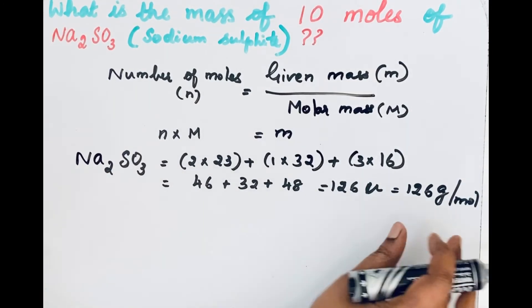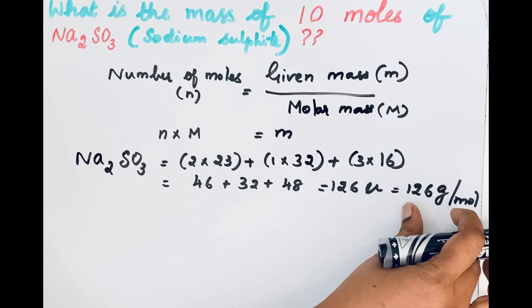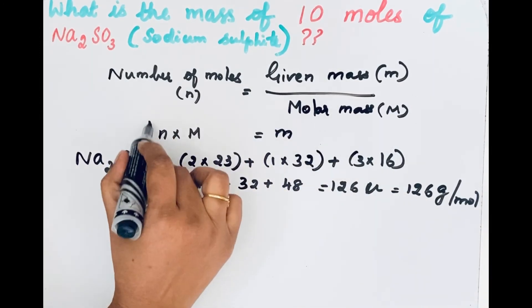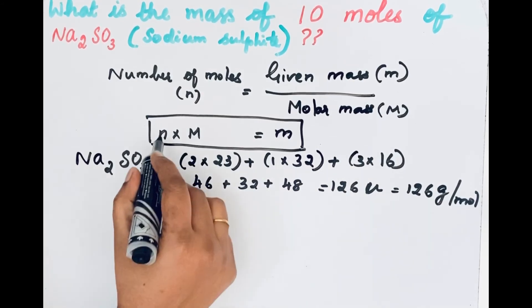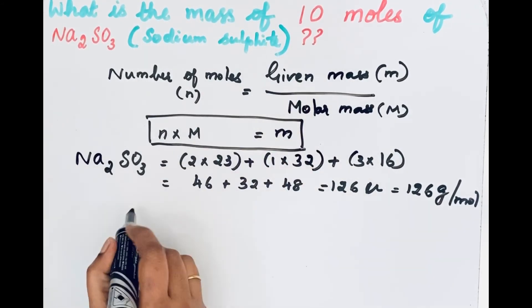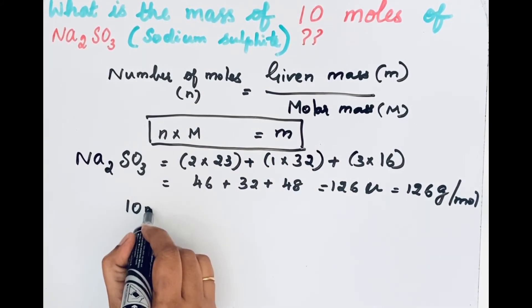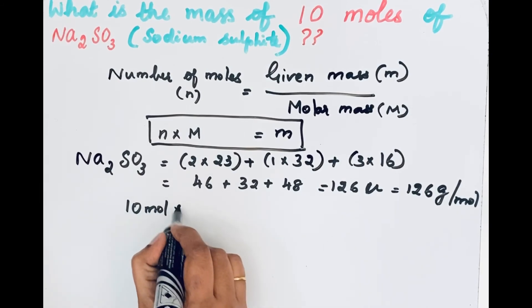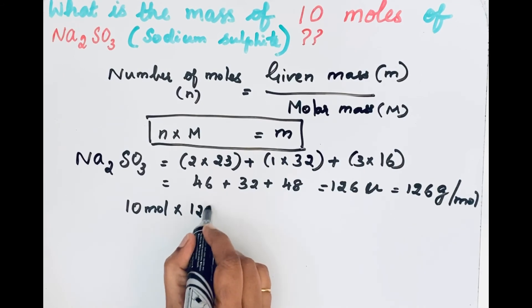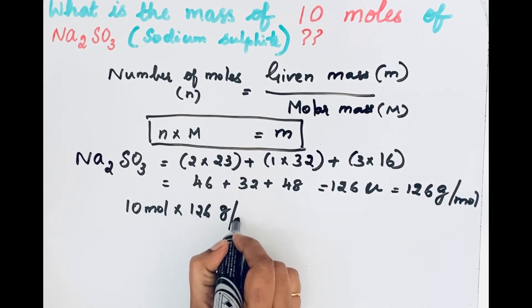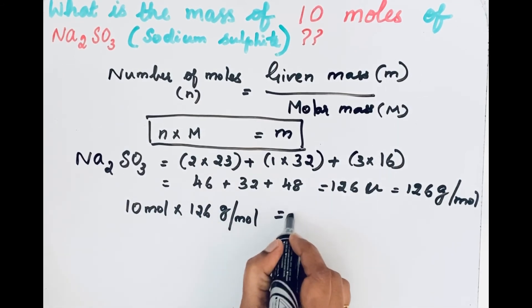Okay. Now we will apply this answer in the formula. So this formula: n is given, number of moles equals 10 mole times - what is that molar mass? 126 gram per mole equals m.